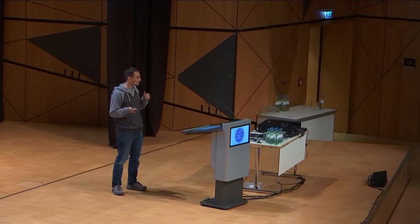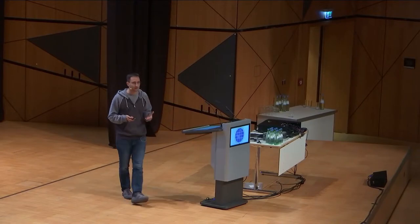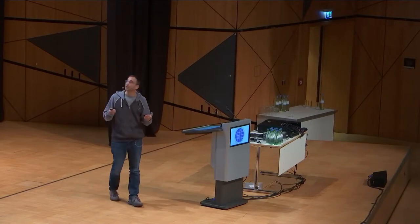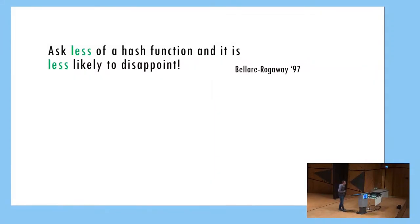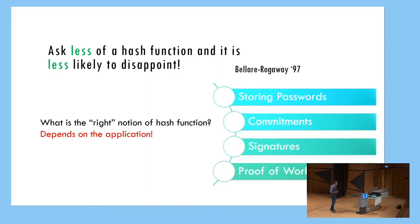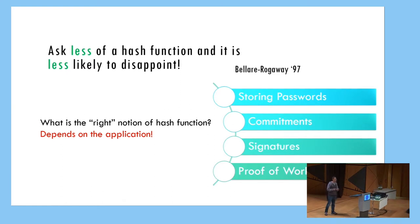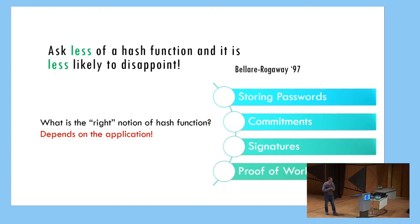So this is a talk about hashing, and I want to start this talk with my favorite quote: "Ask less of a hash function, and it's less likely to disappoint you." This is Bellare-Rogaway. And the meaning is that there is no right notion of security of a hash function, and this really depends on the application. So we have a lot of applications of hash functions, and for each you can get the application with a different notion of security.